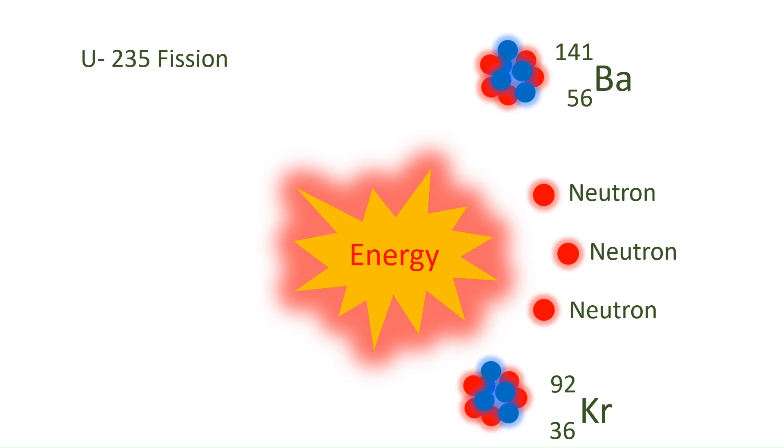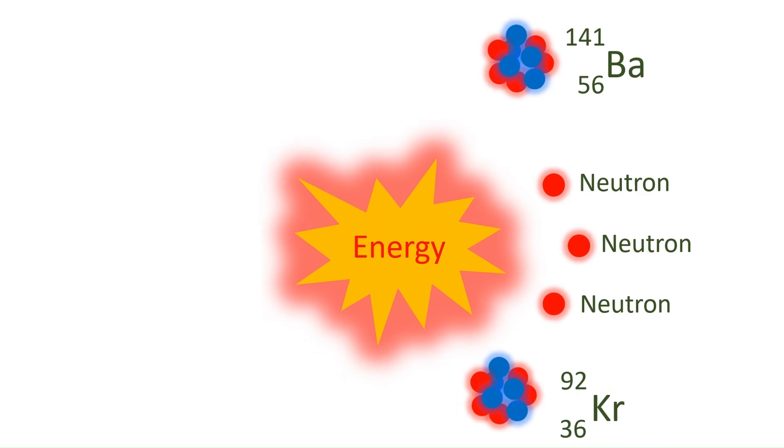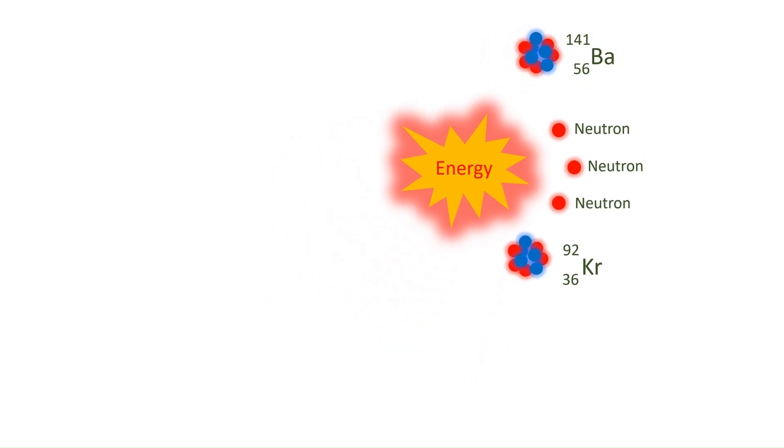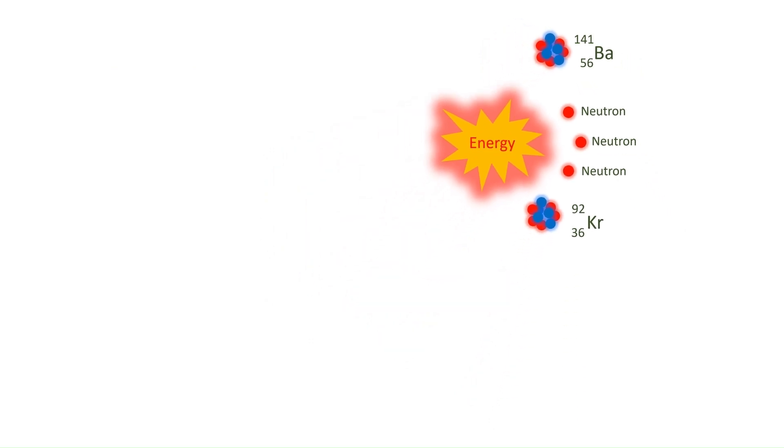Apart from that, it releases three neutrons in energy. This energy is in the form of heat. The equation for this fission process shows that the total mass number and proton number before and after fission are balanced.